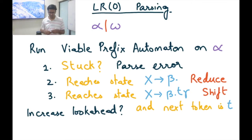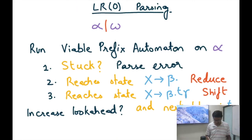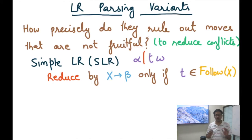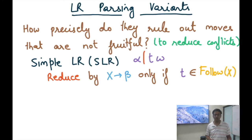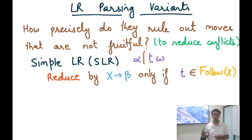This is the motivation for the next improvement over LR0: the Simple LR algorithm, or SLR. These algorithms differ only in how precisely they rule out moves that are not fruitful to reduce conflicts. With a lookahead of one, more options can be eliminated, making the parser more precise.